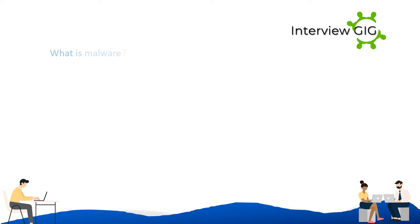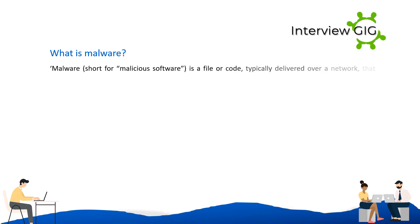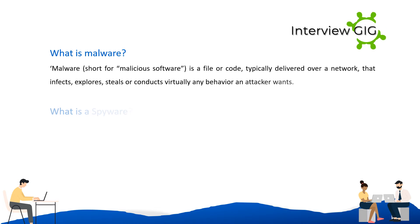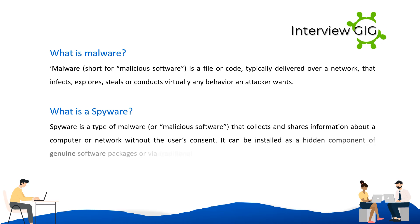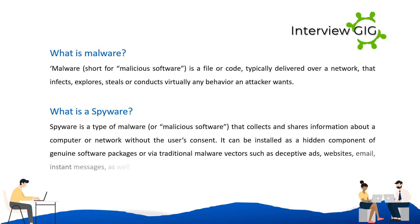What is malware? Malware, short for malicious software, is a file or code typically delivered over a network that infects, explores, steals, or conducts virtually any behavior an attacker wants. What is spyware? Spyware is a type of malware that collects and shares information about a computer or network without the user's consent. It can be installed as a hidden component of genuine software packages or via malware vectors such as deceptive ads, websites, email, instant messages, or direct file-sharing connections.